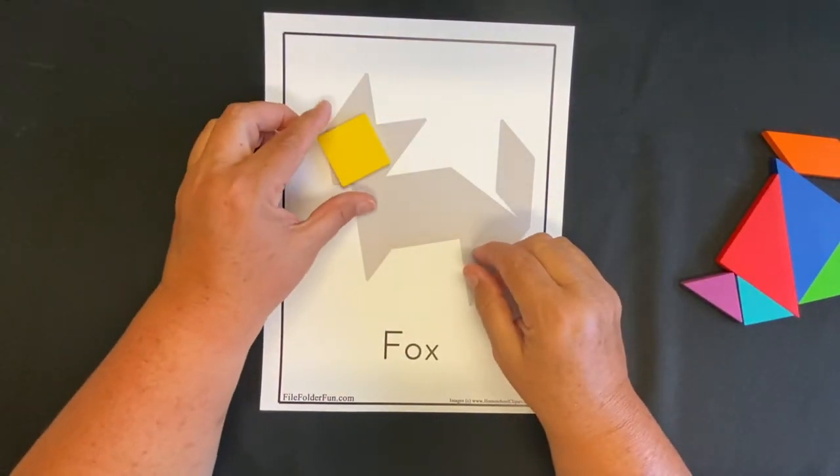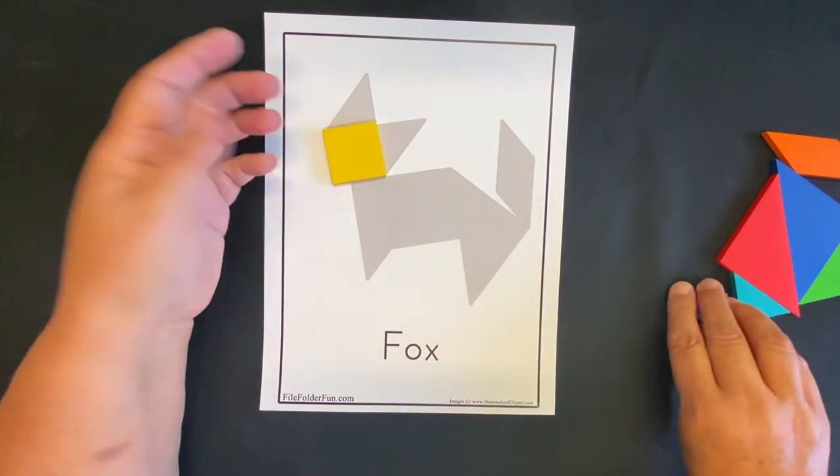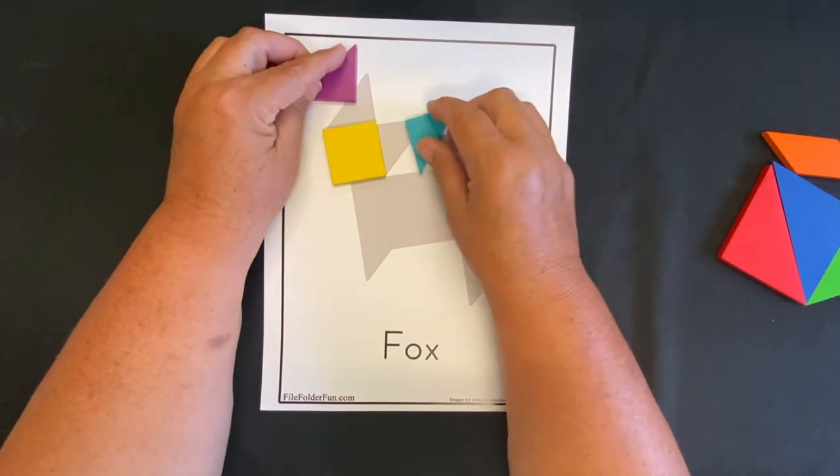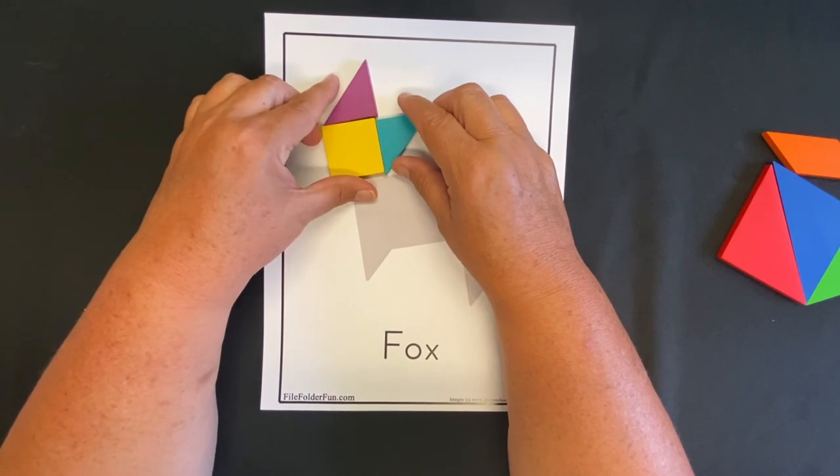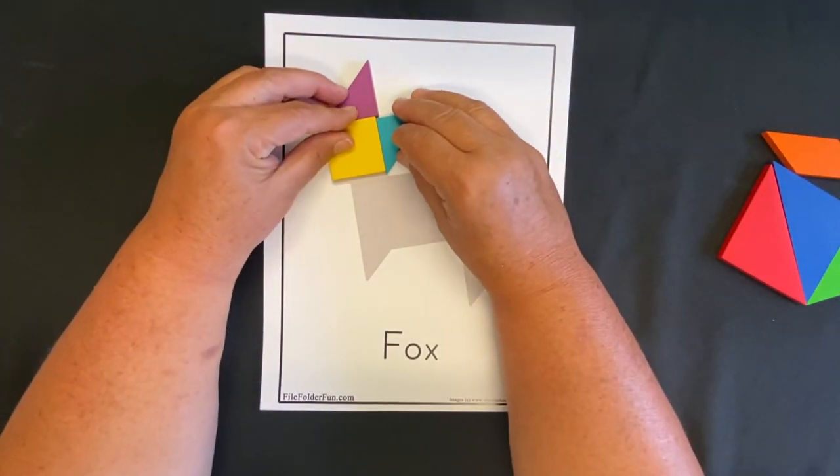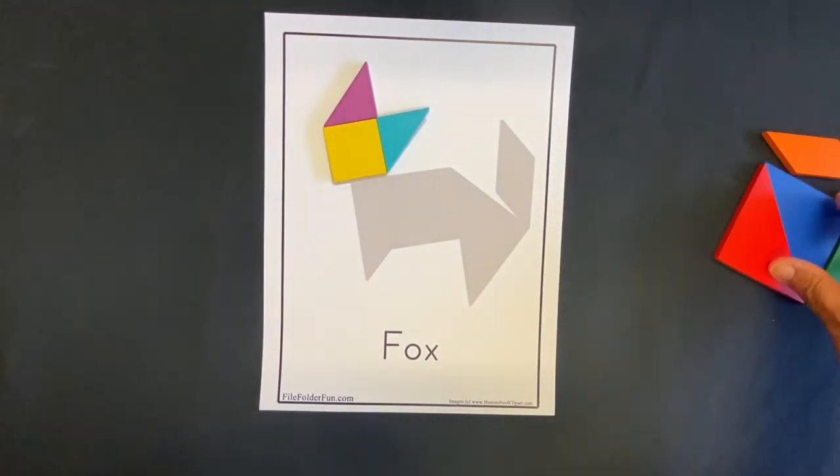So we're going to use the square for his head. The ears seem to always be small triangles. That might not be true in everything, but the animals that I looked up, that's what it seemed to be. So there's our fox head, his beautiful ears. I'm going to try to put him on there just so.